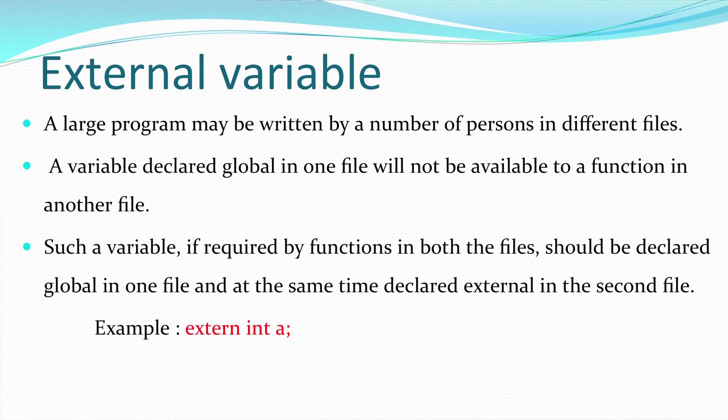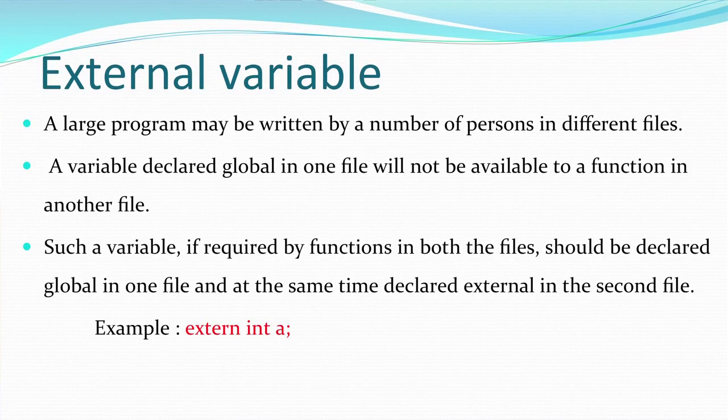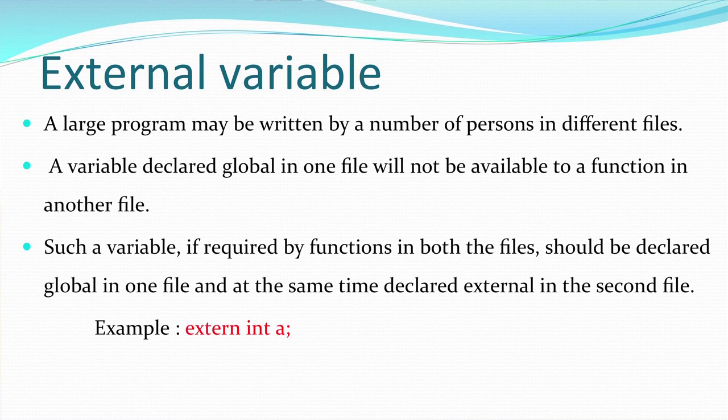An external variable is used when you want to access a particular variable across multiple files. If you have data in one C++ file and want to access that same variable in another file, you declare it as an external variable using the keyword 'extern'. A large program written by multiple people can share data using external variables.